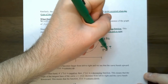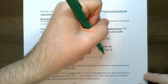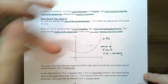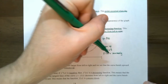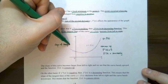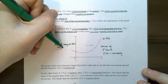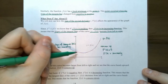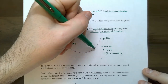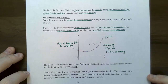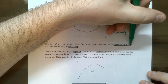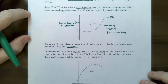A concave up graph means the second derivative is positive, which means the first derivative is increasing — not that the original function is increasing, but that the derivative is increasing. The slopes of the tangent lines are increasing from left to right. You can see this from the graph: at one point the slope of the tangent line is negative, further right it becomes positive, and further still it's even greater. So the slopes are increasing from left to right, meaning the graph is concave up — it looks like a cup shape.